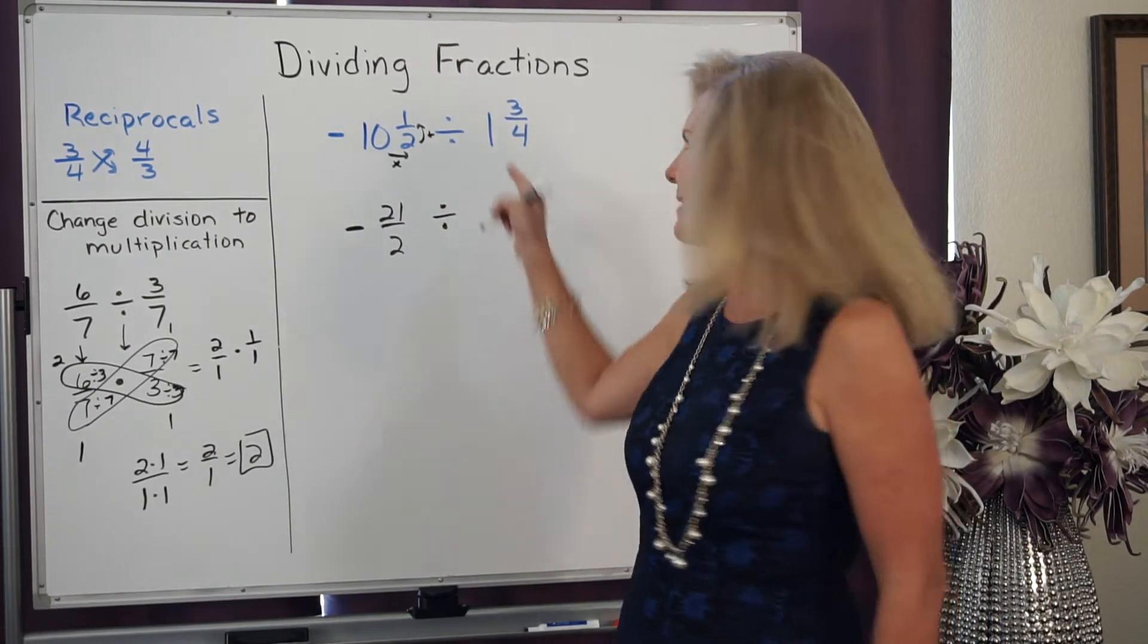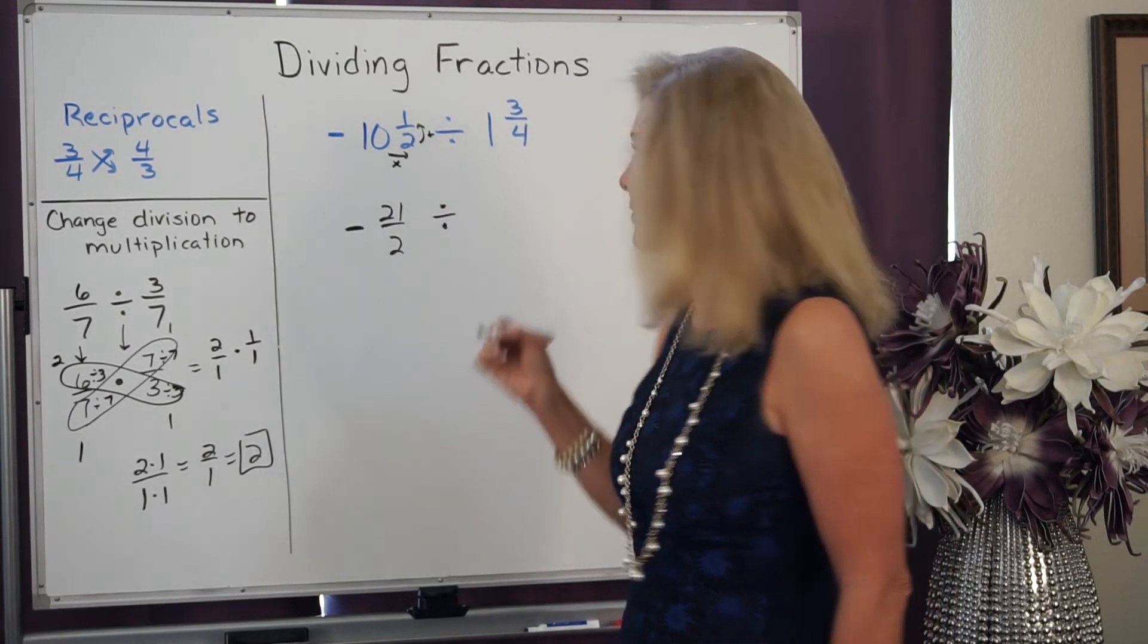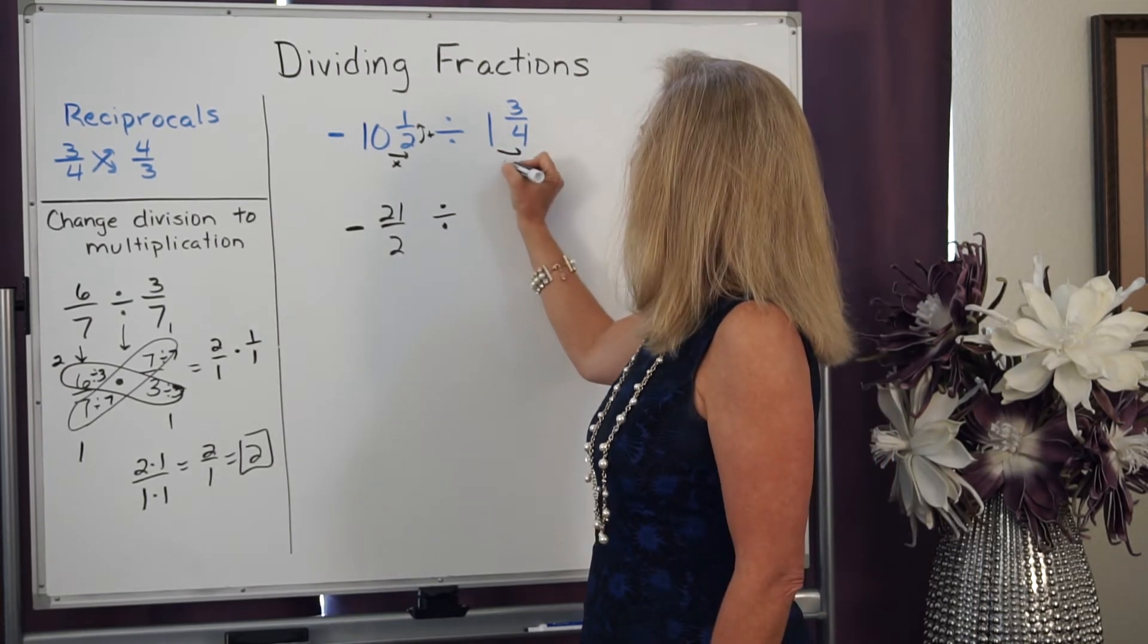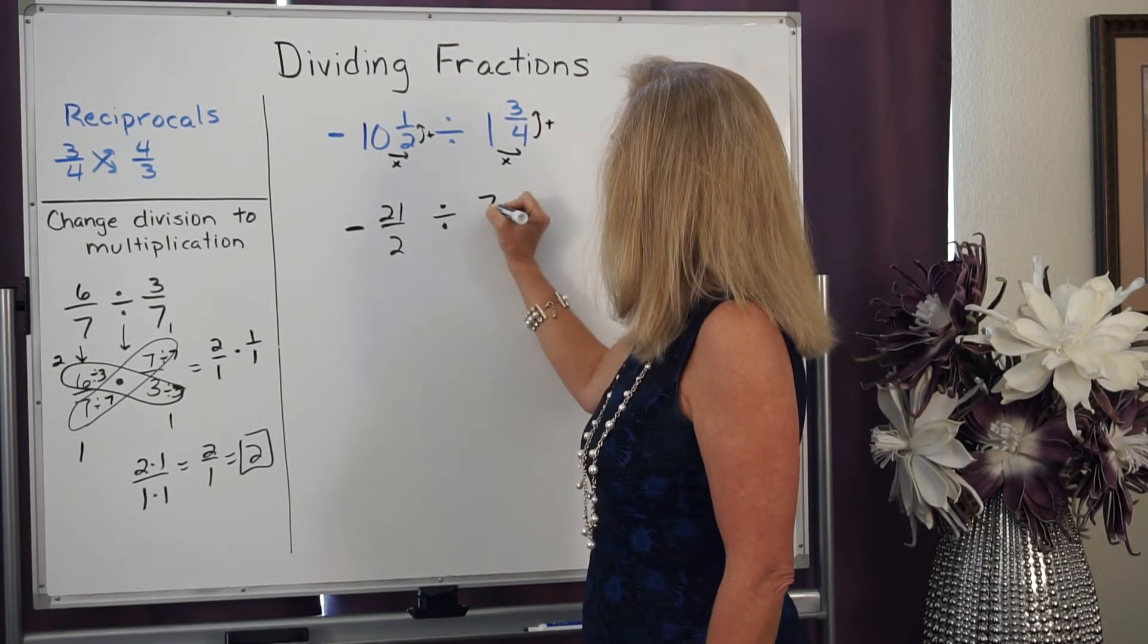Now I'm going to keep that division sign because I need to change the second one too. I never try to do more than one step at a time. So I'm going to do 1 times 4 is 4 plus 3 is 7.